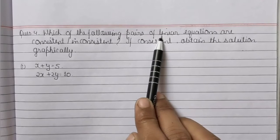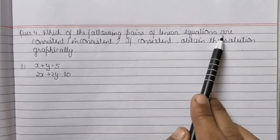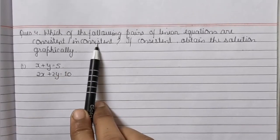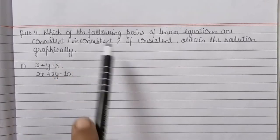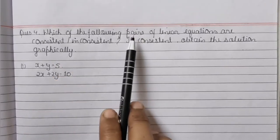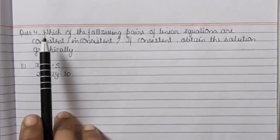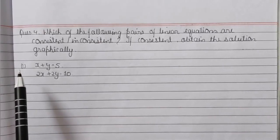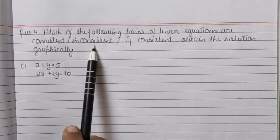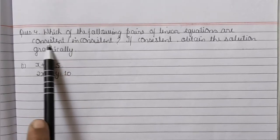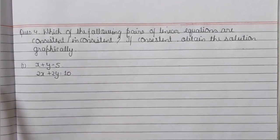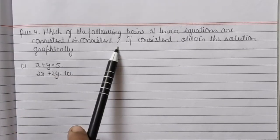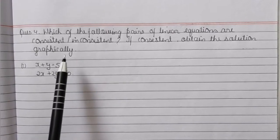Which of the following pairs of linear equations are consistent or inconsistent? We will discuss whether each pair is consistent or inconsistent. I have told you in the previous lecture how we determine consistency. I will give you a quick recap so that you can follow this portion.